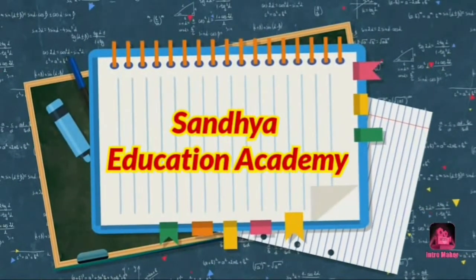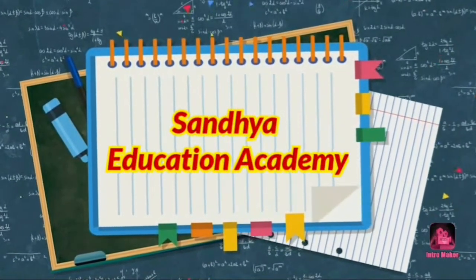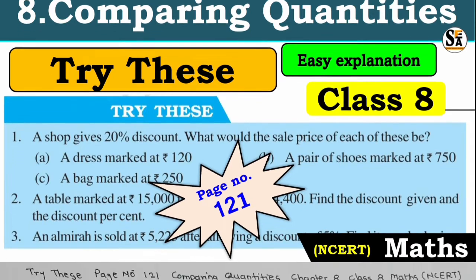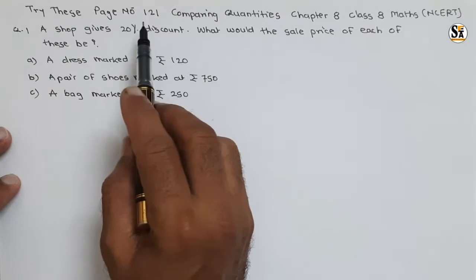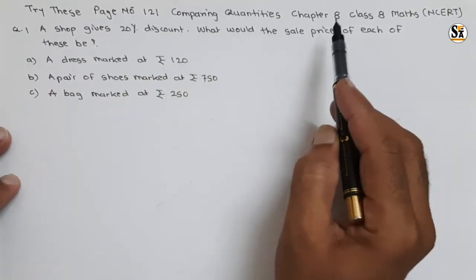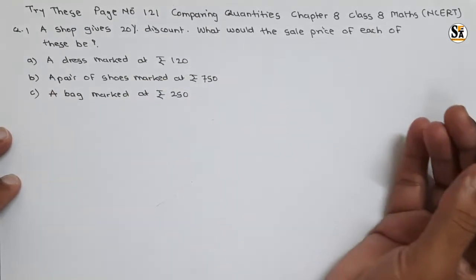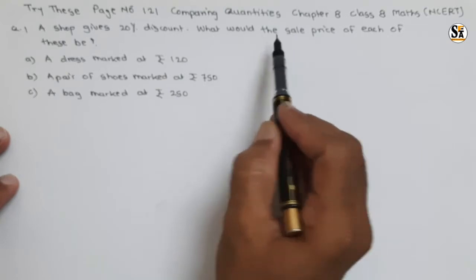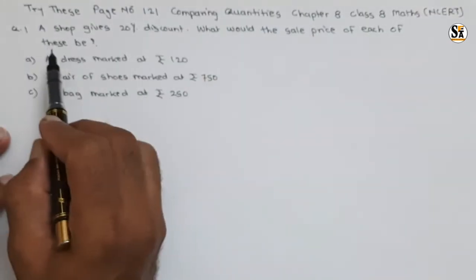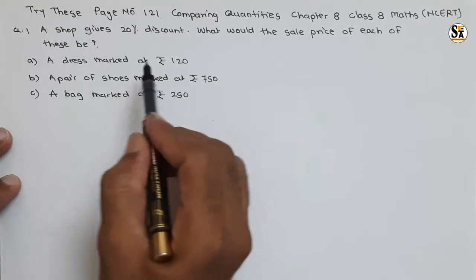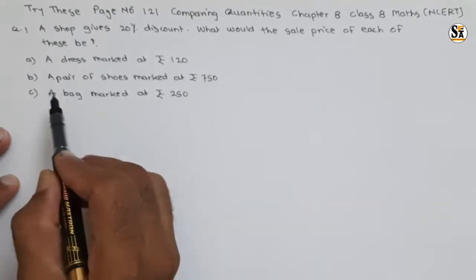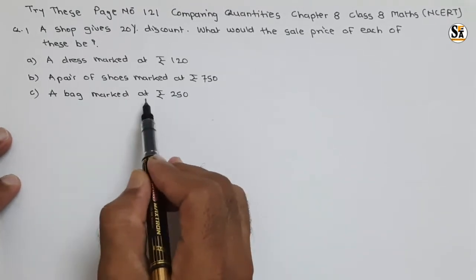Hello, welcome to Sunday Education Academy. I am Santosh. In this video we will see questions under the 'Try This' section, page number 121, comparing quantities, Class 8 Mathematics. The question is: given a shop gives 20% discount, what would the sale price of each of these be? First is a dress marked at rupees 120, a pair of shoes marked at rupees 750, and a bag marked at rupees 250.